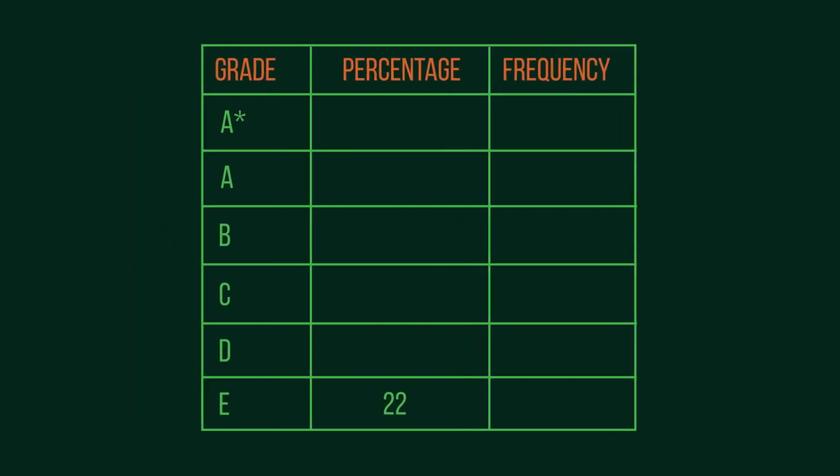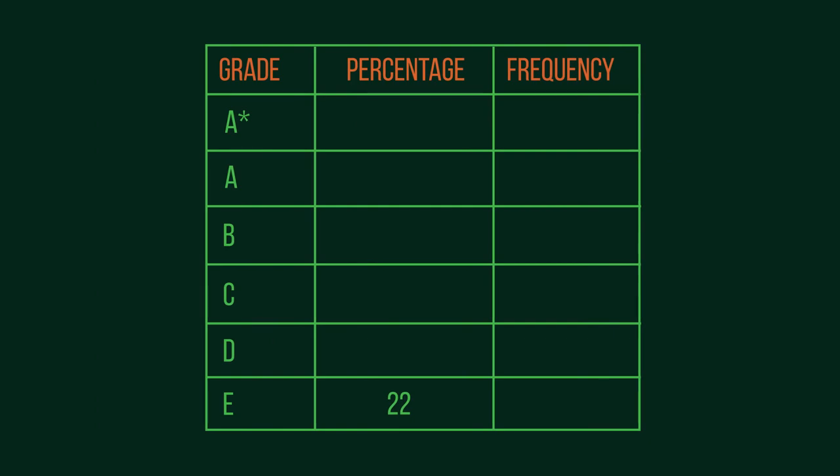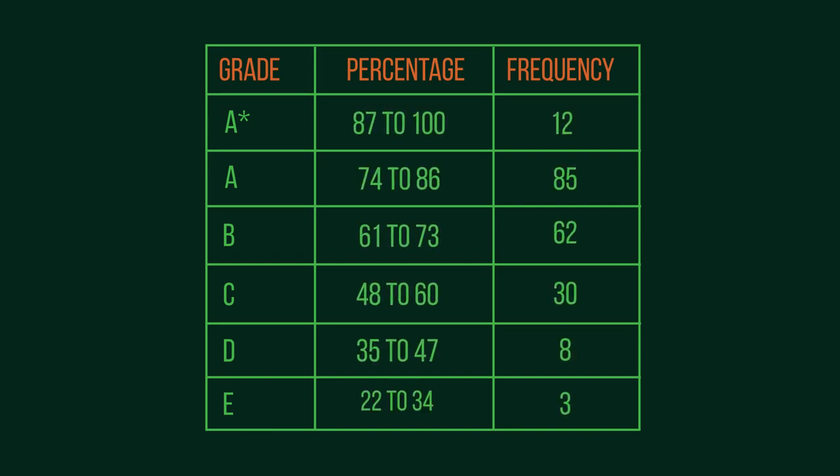Starting from the bottom at 22, add 13 is 35, so the next group starts at 35. Adding 13 each time, and then fill in the rest of the group at the end. We now have six groups that are pretty much the same class width.